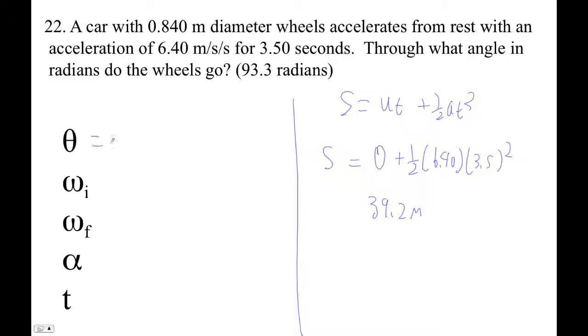And then I can find the angle. Angle is s over r, right? And I'm using the relationship s equals theta r for the tangential relationship. So therefore theta is s over r. That's 39.2 meters divided by the radius—so that's the diameter, the radius is 0.42—divided by 0.42 is 93.3 radians.